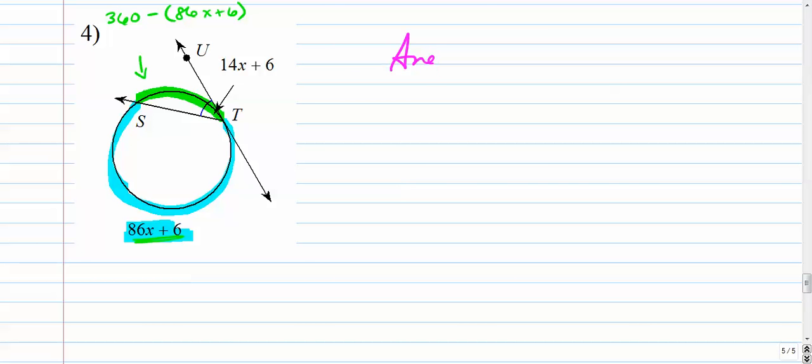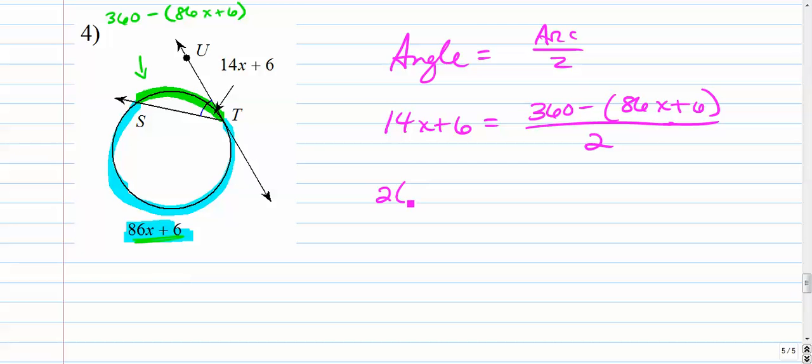So here we go. We're going to say that the angle is equal to the arc over 2. The angle is 14x plus 6. The arc is the green one now. 360 minus quantity 86x plus 6. Alright. Let's multiply both sides by 2. We have to distribute here. So we get 28x plus 12.